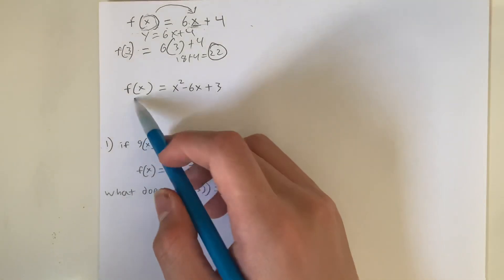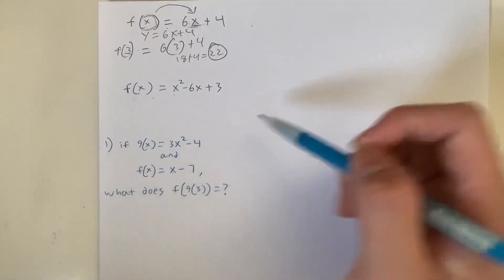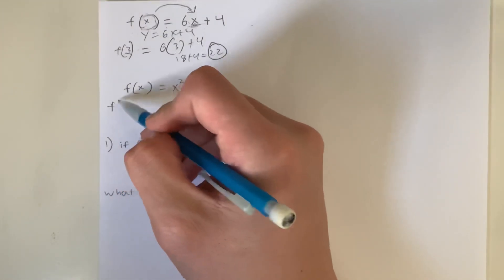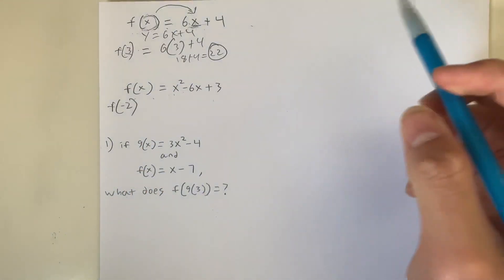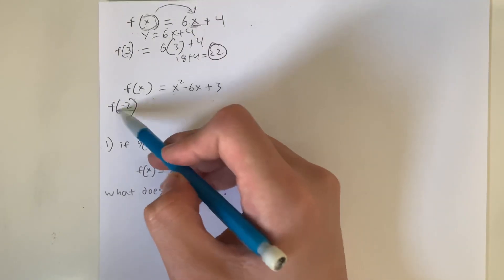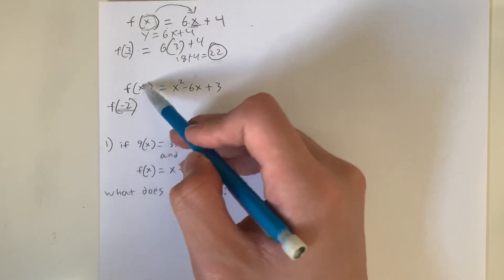So let's look at f(x) equals x squared minus 6x plus 3. So what if the question we're asking for f of negative 2? What does this mean? It means we plug in this value, negative 2, for every value of x we see.